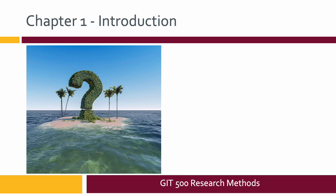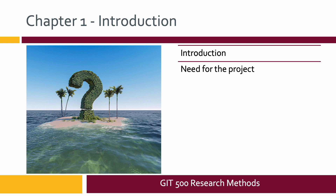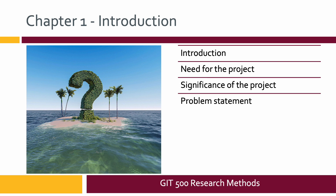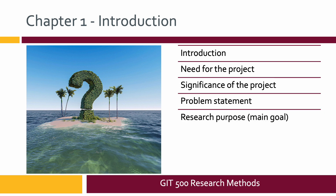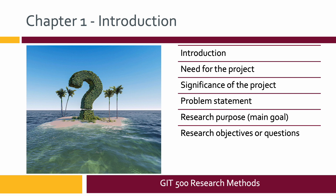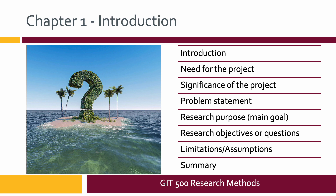The first chapter is the introduction. In it you're going to give a brief introduction to the general area of study, what the project is needed for, who the project benefits, and what the significance is. You'll include a problem statement explaining why the study is needed, your research purpose or overarching goal, research objectives or research questions, something called limitations and assumptions, and then a summary. All chapters in a five-chapter paper need an introduction at the beginning and a brief summary at the end.